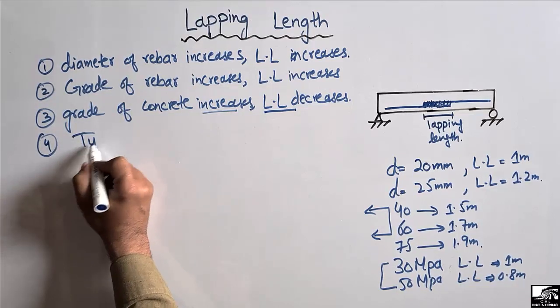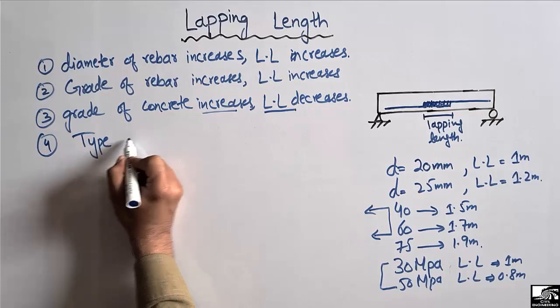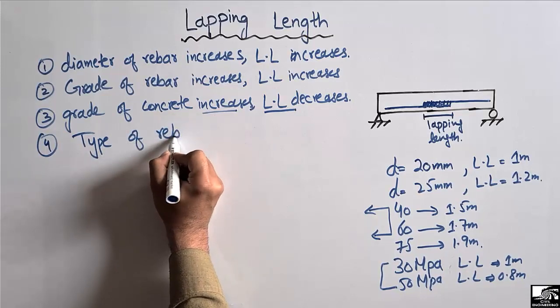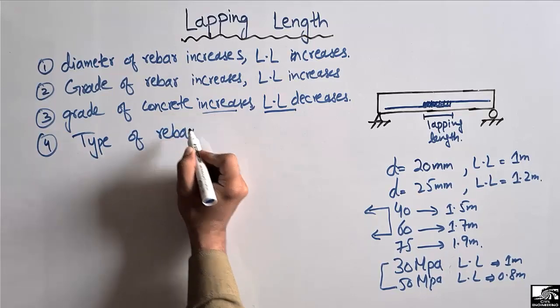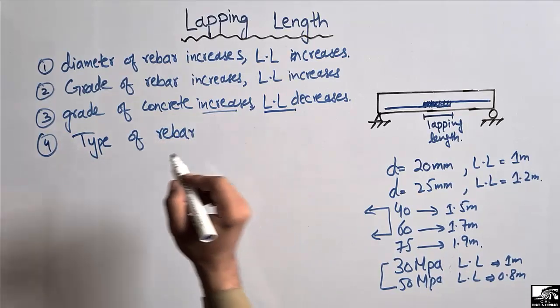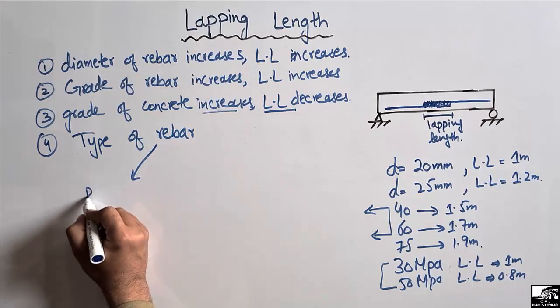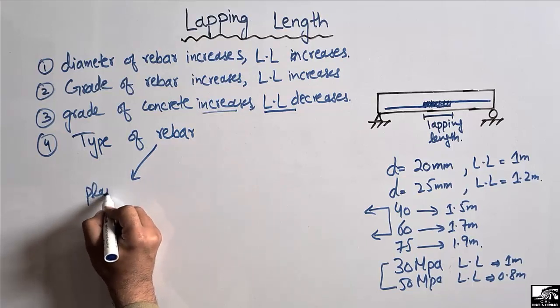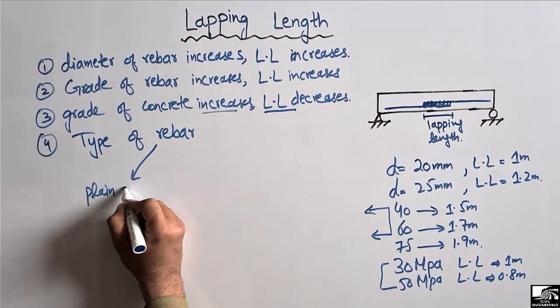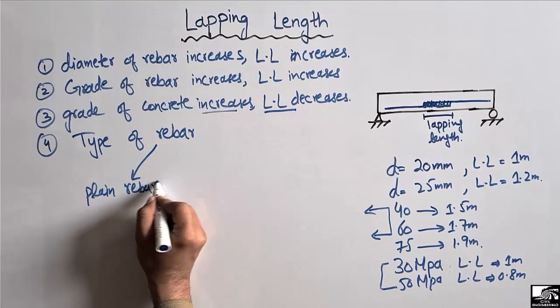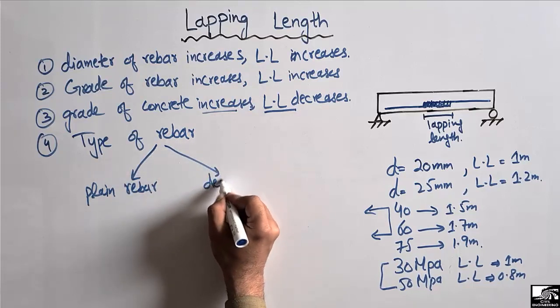The fourth factor that affects the lapping length is the type of rebar. There are two types: plain rebar and deformed rebar.